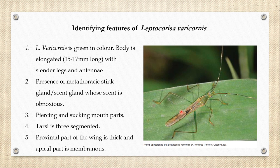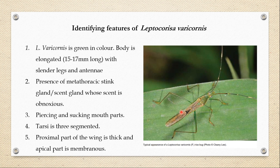The identifying features of Leptocoryza variconis: it is green in color, with an elongated body 15 to 17 millimeters long, and has slender legs and antennae. There is a metathoracic stink gland or scent gland present which secretes chemicals with a very obnoxious smell, so whenever there is an attack of Leptocoryza in the rice field, you can smell it while passing by. It also has piercing and sucking mouthparts, a tarsus that is three-segmented, and the proximal part of the wing is thick and leathery while the apical part is membranous — the heteropteran character.